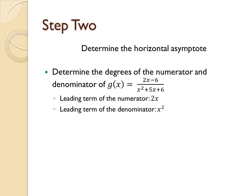By doing so, we can see that the leading term of the numerator has a lower degree than that of the denominator. Thus, our horizontal asymptote is 0.